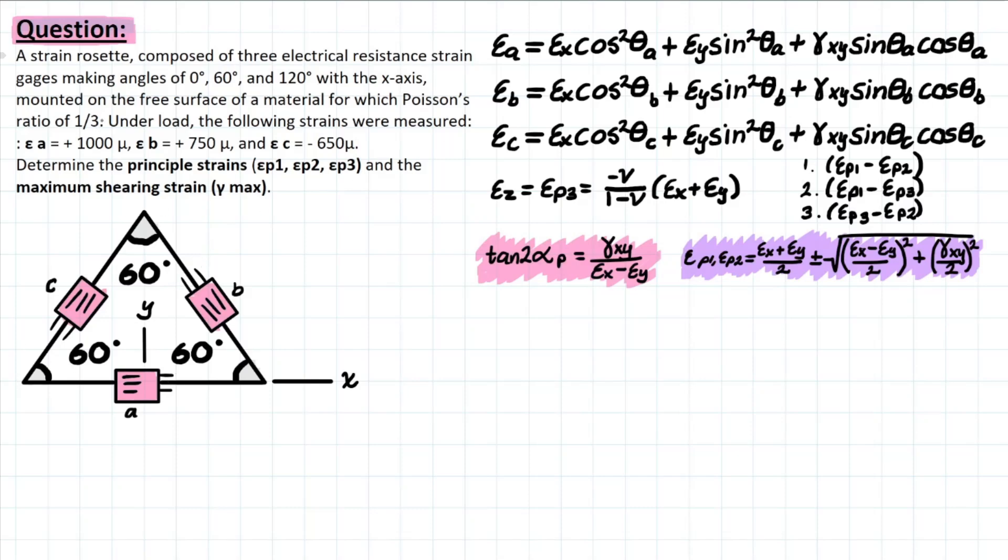It gives us the material property of Poisson's ratio of 1/3, and it tells us the individual strain developed by each of these strain gauges with respect to the angle of inclination that's given in the problem.